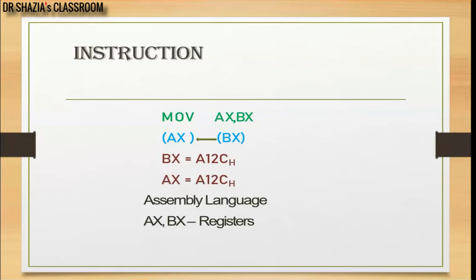In this assembly language instruction MOV AX, BX — MOV is the opcode and AX and BX are the operands. When we write this instruction, the assembler generates an equivalent machine code, because our processor can only understand binary numbers. So the assembler converts MOV AX, BX into an equivalent machine code or binary number, and this machine code is stored in memory.